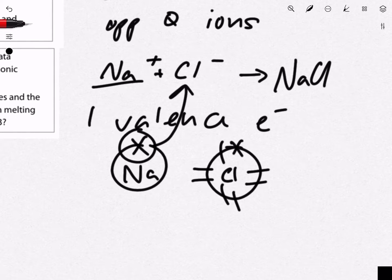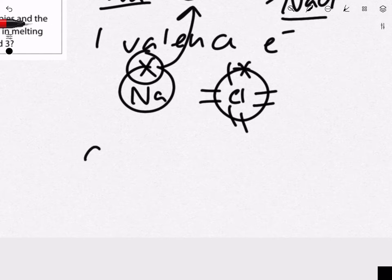This will create oppositely charged ions. As we see, Na is positive, Cl is negative, leading to the creation of the ionic bond between Na and Cl.